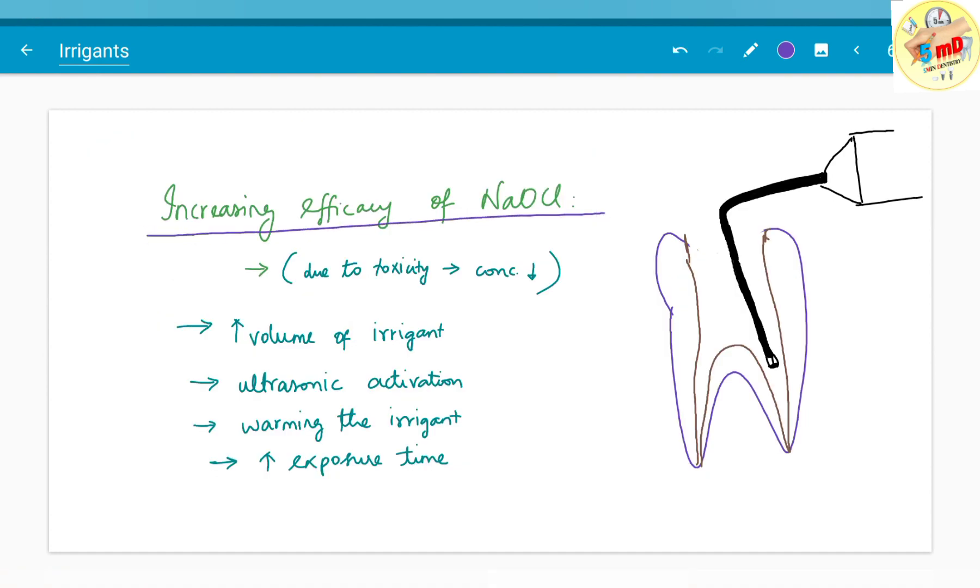Finally, how to increase the efficacy of sodium hypochlorite: Since we use decreased concentrations of 2.5% or less due to toxicity, we increase the volume of irrigant. The solution can be activated by ultrasonic activation or warming the irrigant. Also, increasing the exposure time will help potentiate the solution.